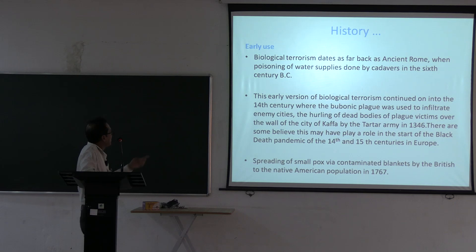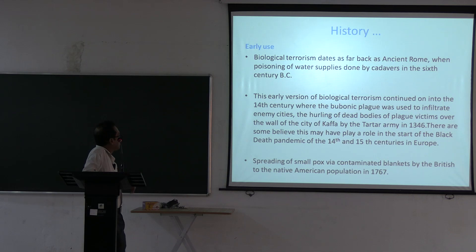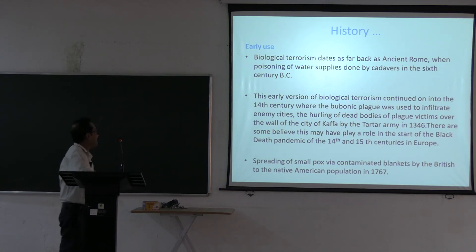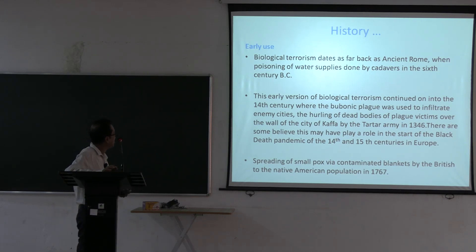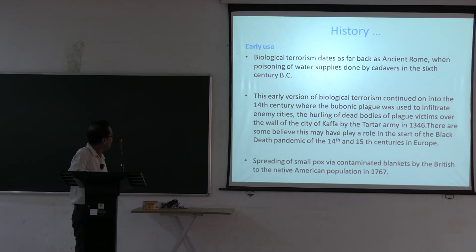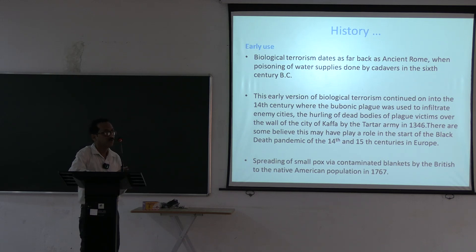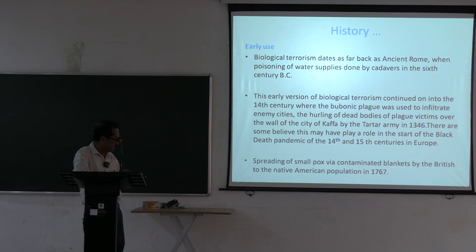In the 14th century, bubonic plague was used to infiltrate enemy cities. Dead bodies of plague victims were hurled over the walls of the city of Kaffa in 1346. Some believe the Black Death pandemic may have been triggered by this act.